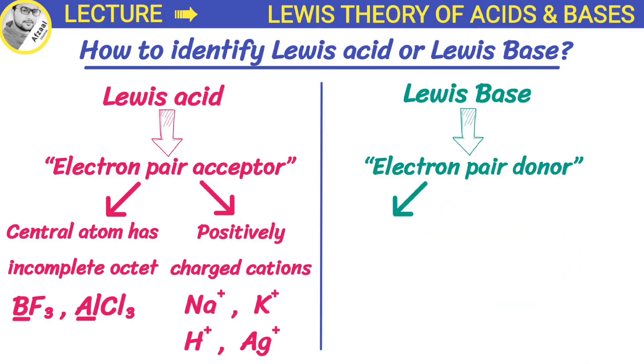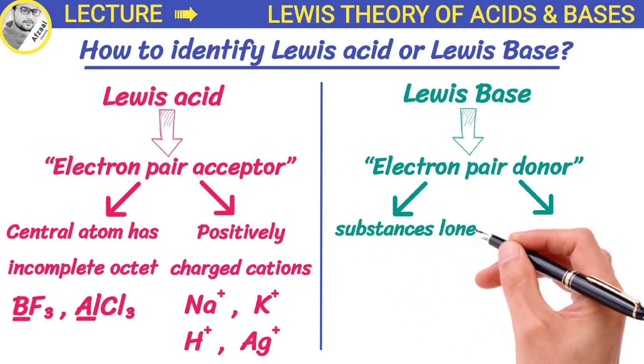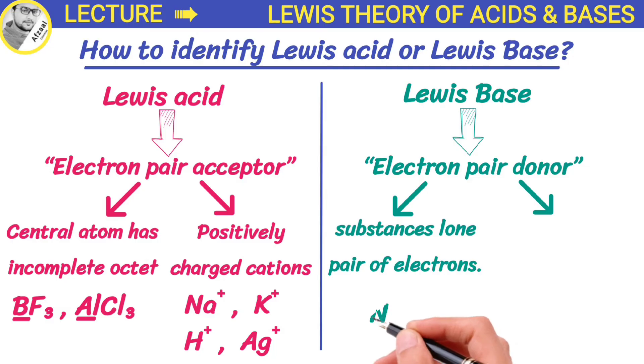Similarly, there are two types of substances that can act as Lewis bases. Neutral species having at least one lone pair of electrons. For example, ammonia has a lone pair of electrons, so it acts as a Lewis base.